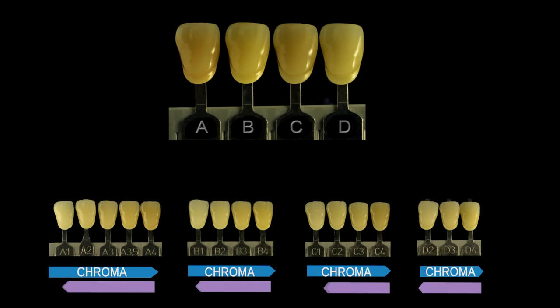For instance, A4 is the Shade Tab with the lowest value and thus appears darkest. Now, to the steps for proper shade selection.